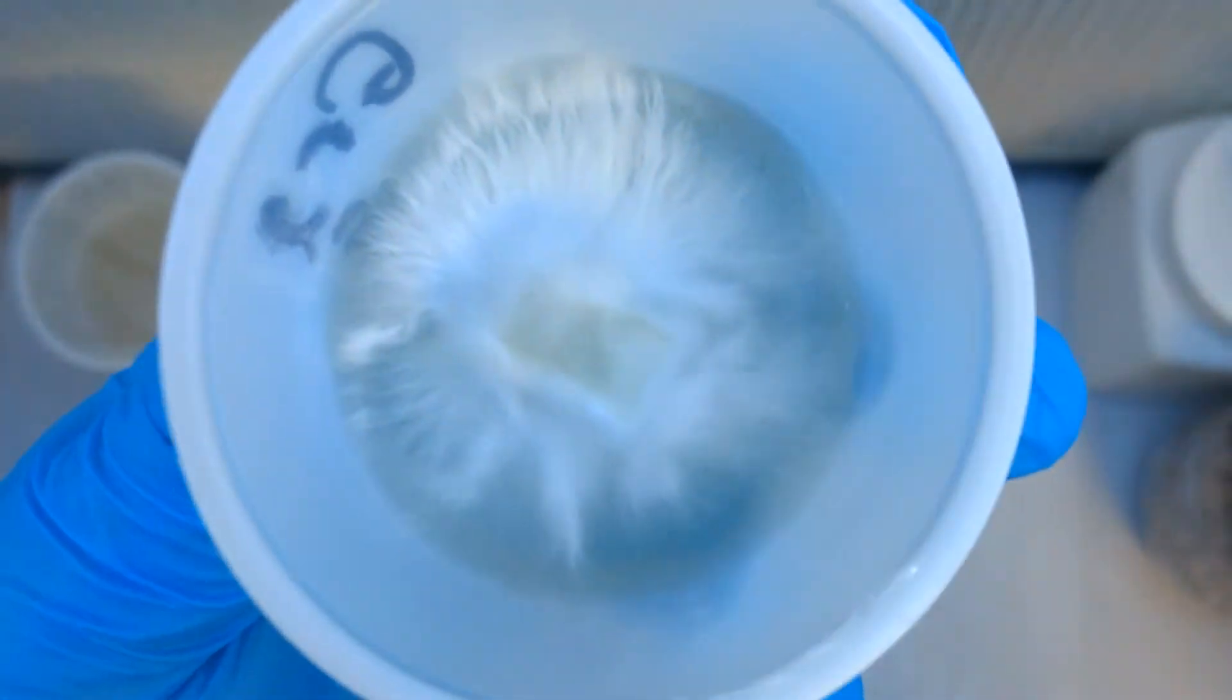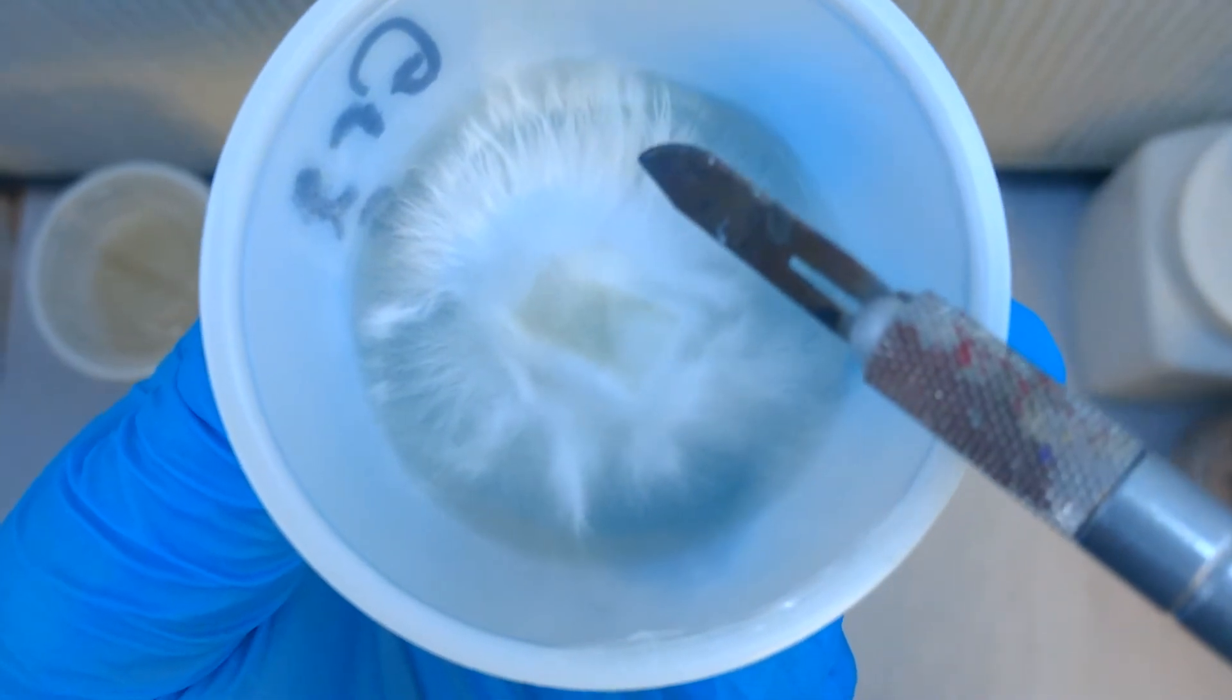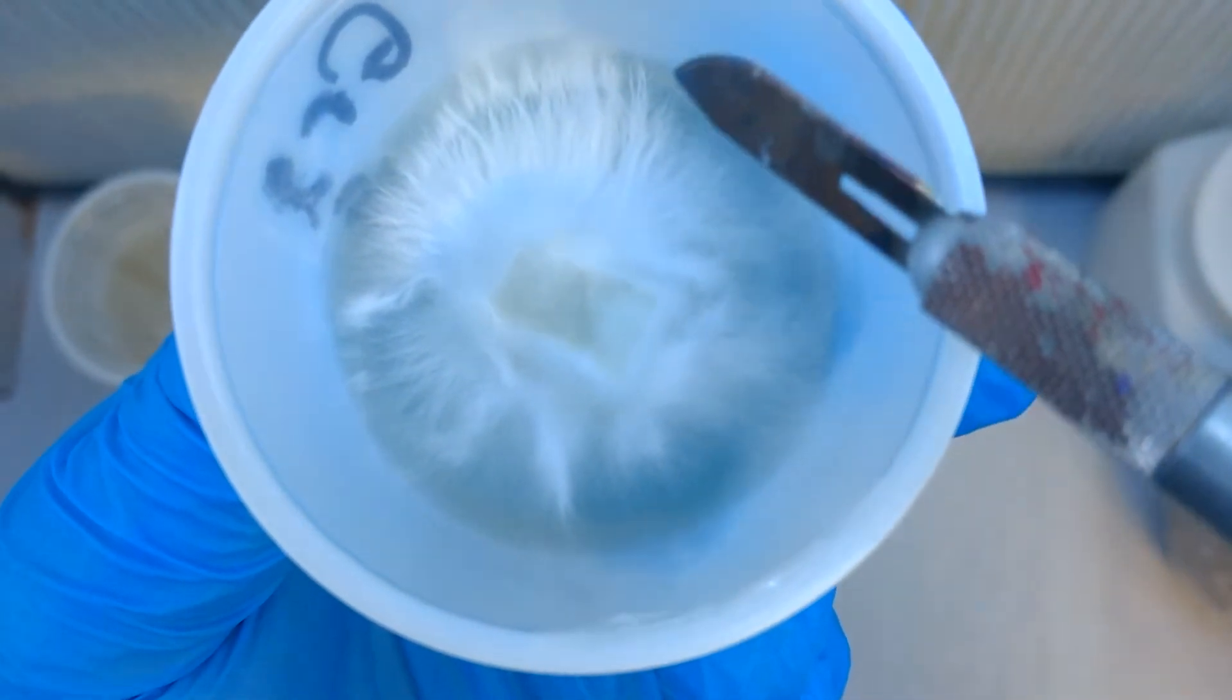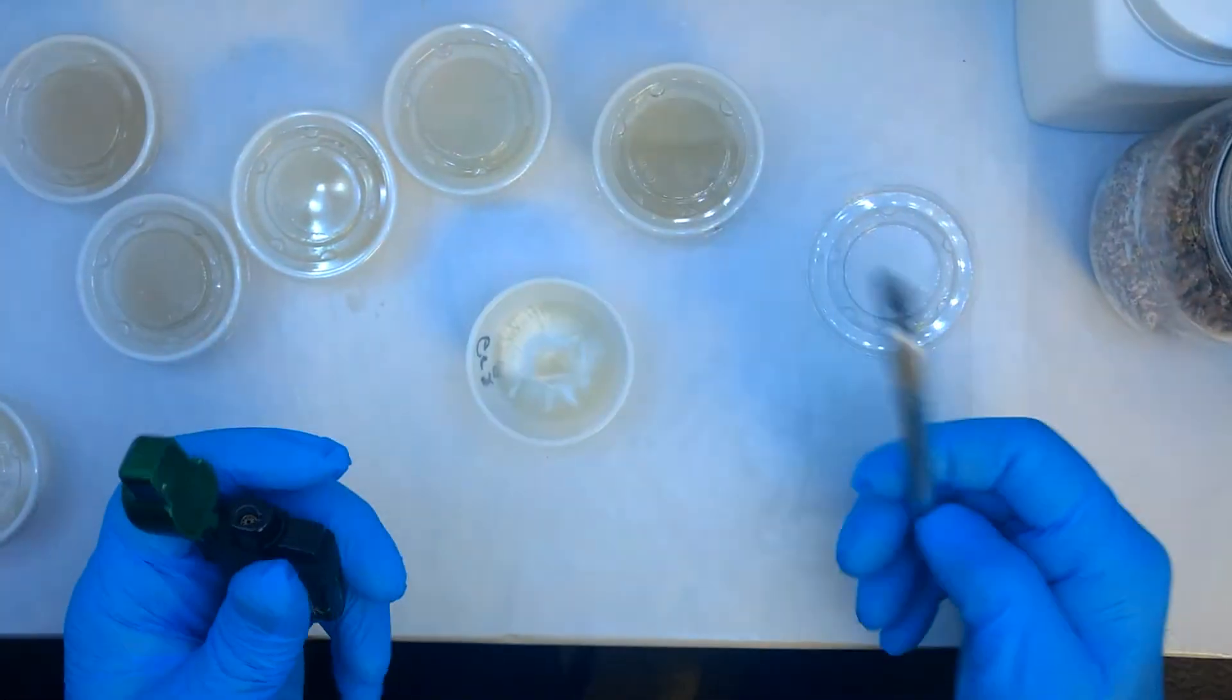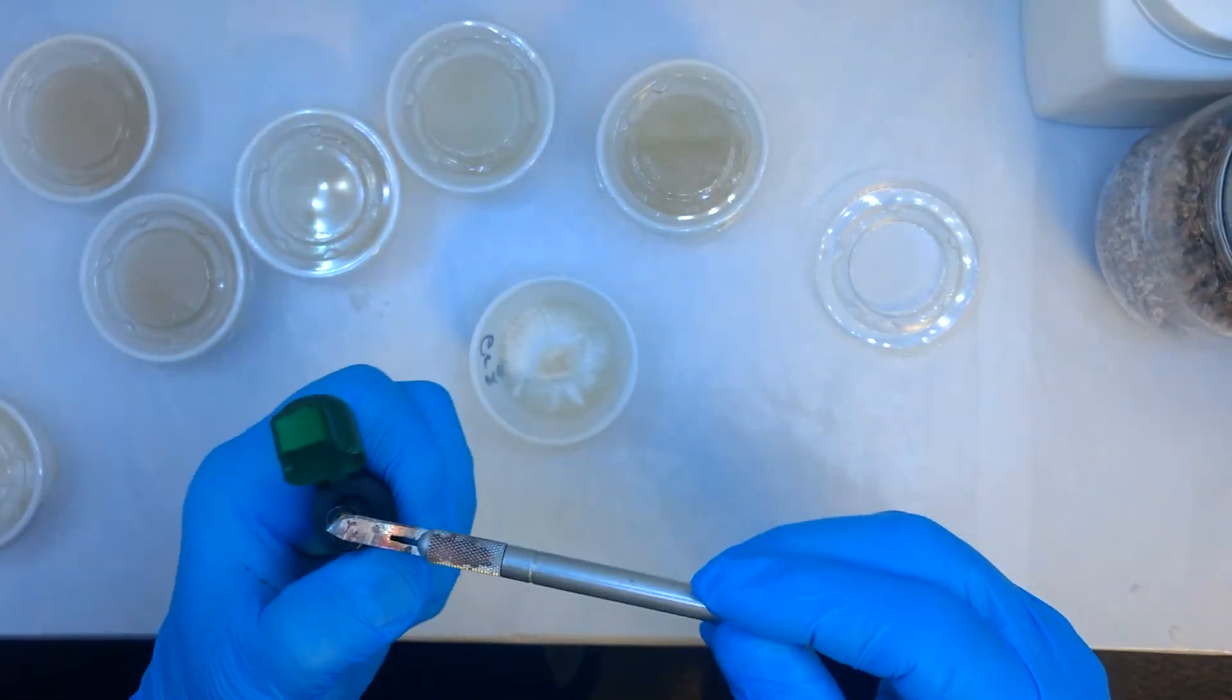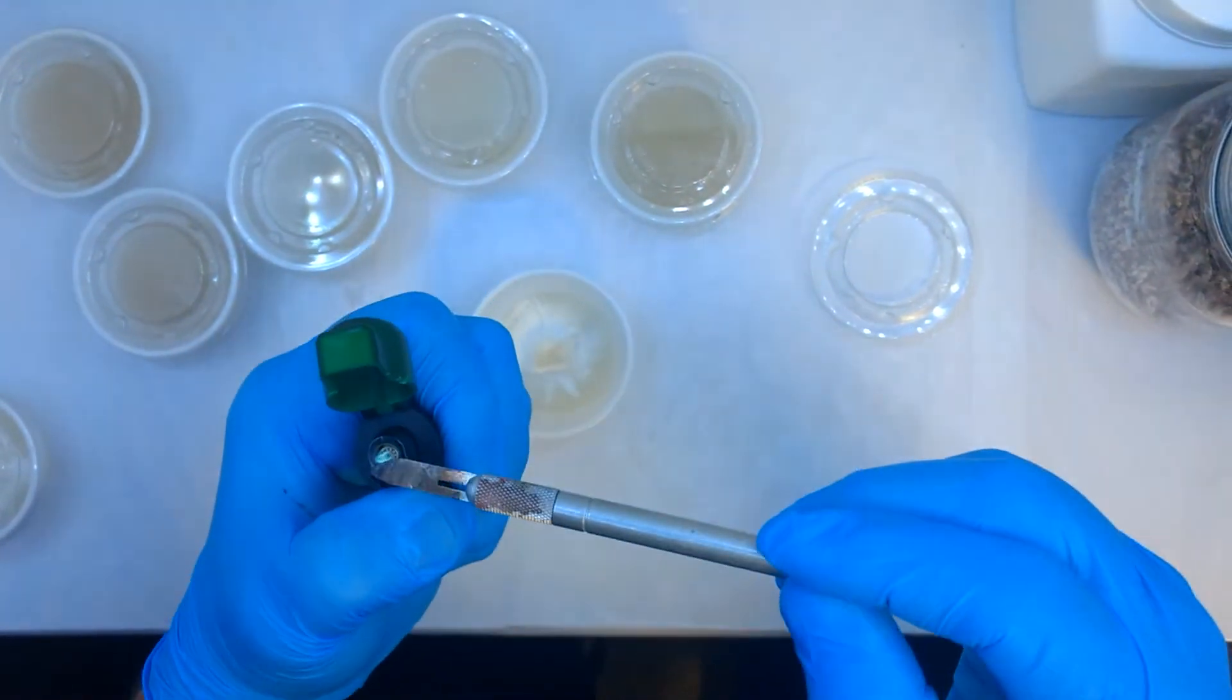So we're going to be selecting these stronger branches, like a tree branch, and placing those onto more agar dishes. This will keep the strain going, keep the strain strong, and you can put that agar into your grain spawn or into liquid culture.